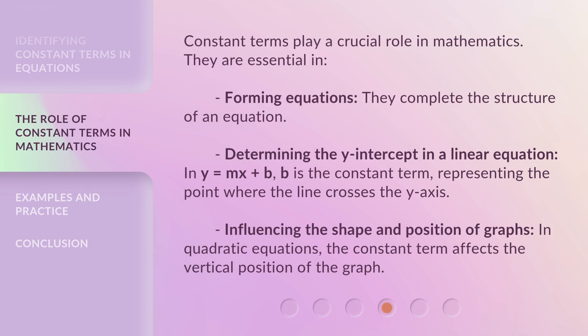Constant terms play a crucial role in mathematics. They are essential in forming equations, completing the structure and determining the y-intercept in a linear equation. In y = mx + b, b is the constant term, representing the point where the line crosses the y-axis and influencing the shape and position of graphs. In quadratic equations, the constant term affects the vertical position of the graph.